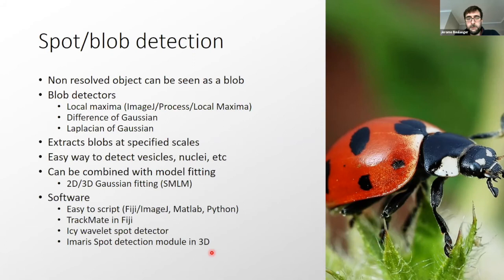This is an easy way to detect single molecule vesicle nuclei with everything which is not with very defined shape and it can be combined with 2D or 3D Gaussian fitting if your object can be approximated with a Gaussian function to improve for example the localization accuracy. This is what makes the base of the single molecule localization microscopy that you will see with John next time. These kind of approaches are easy to script in any languages. These are also available in TrackMate for example for Fiji. IC has a wavelet spot detector and Imaris offers also a spot detection module in 3D which is very convenient.